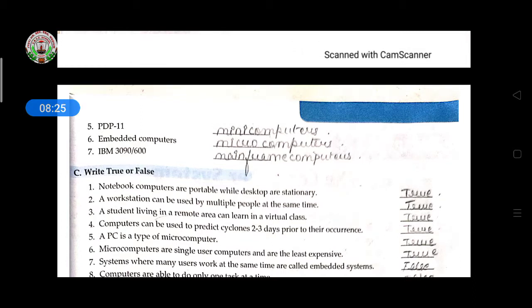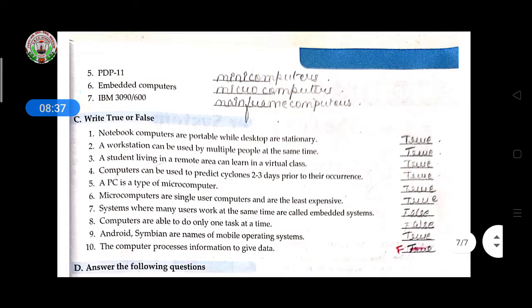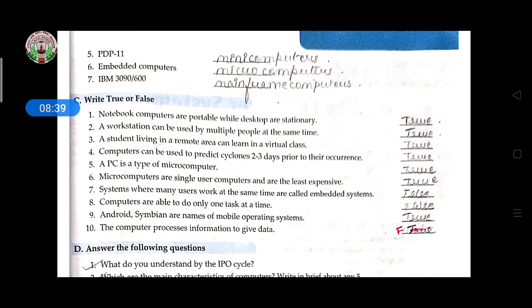PDP-11 mini computer, embedded computers is microcomputer, IBM 3090-600 is mainframe computer. Then true and false: Notebook computers are portable while desktops are stationary - true. A workstation can be used by multiple people at the same time - true. Students living in remote area can learn in virtual class - true.